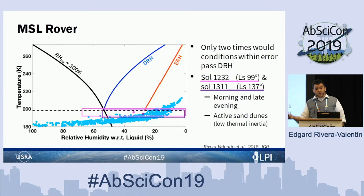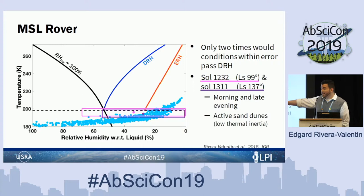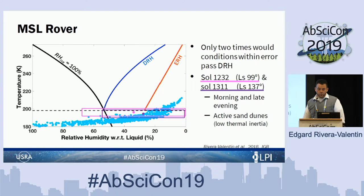Side note: with an error, you can have relative humidity with respect to liquid of about 1,000%, and I thought that was weird. So engineers, please make better instruments. But if you account for the error bars for these points, I have drawn boxes around two points that, within error, you would actually be in the liquid state. Those happen at Sol 1232 and Sol 1311, specifically during the morning and late evening.